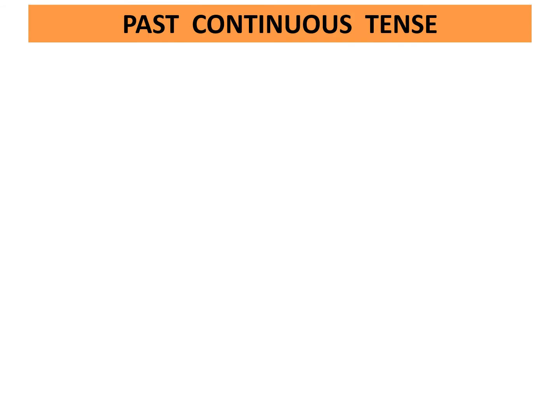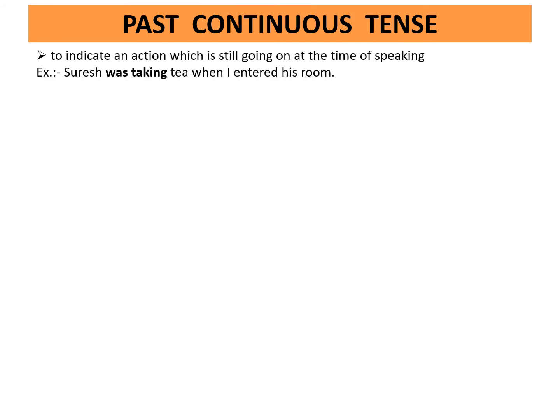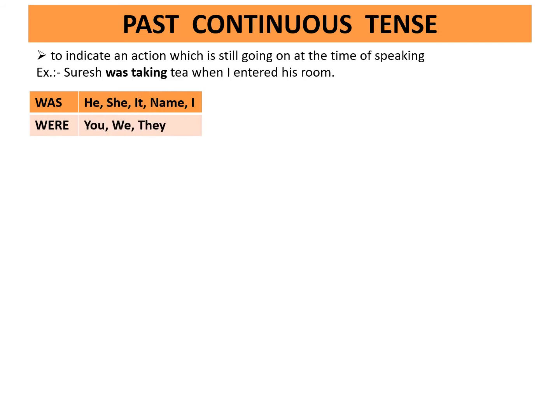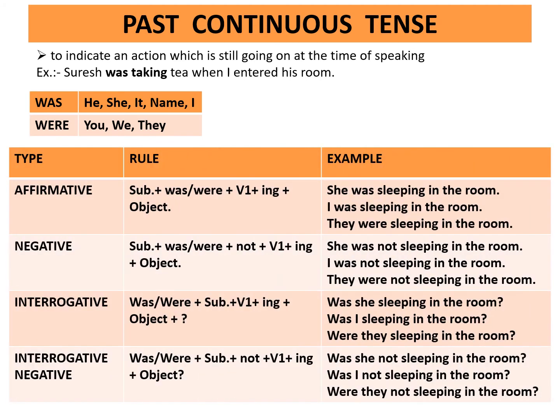Past continuous tense indicates an action which was still going on at a point in the past. Example: Suresh was taking tea when I entered his room. Was is used with he, she, it, name, and I. Were is used with you, we, and they. Affirmative rule: subject plus was or were plus first form of the verb plus ing plus object. Example: She was sleeping in the room. I was sleeping in the room. They were sleeping in the room.